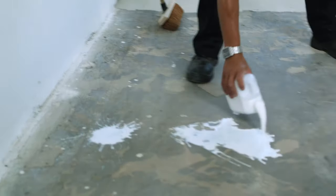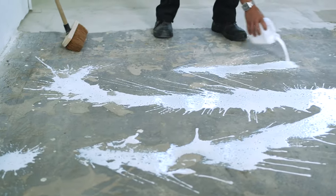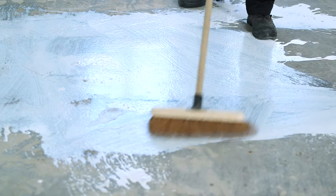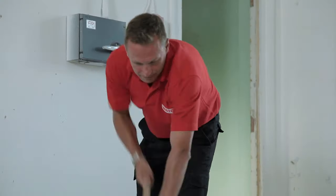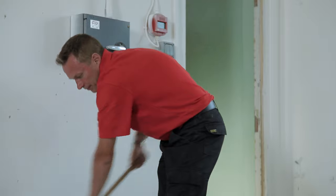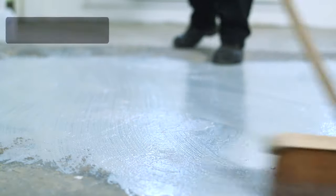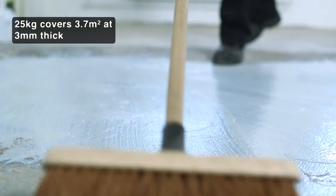First, the primers. Apply Primer 1 using a soft brush and allow it to soak into the concrete for at least 15 to 20 minutes. Primer 1 can be left overnight to dry if time permits. Each 25 kilogram pack of Flowtop will cover approximately 3.7 square metres at 3 millimetres thick.